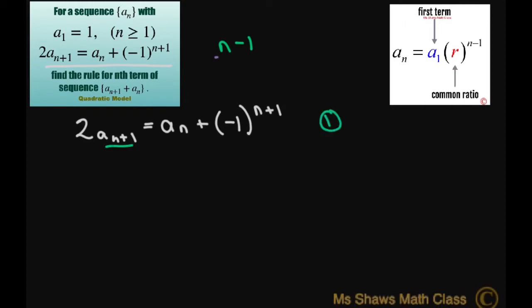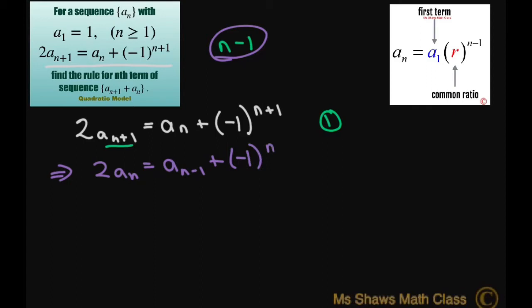If I substitute in n minus 1, I'm going to get 2 a sub n equals a sub n minus 1 plus negative 1 to the power of n. We'll call this equation 2. Now what I want to do is add these two equations together.